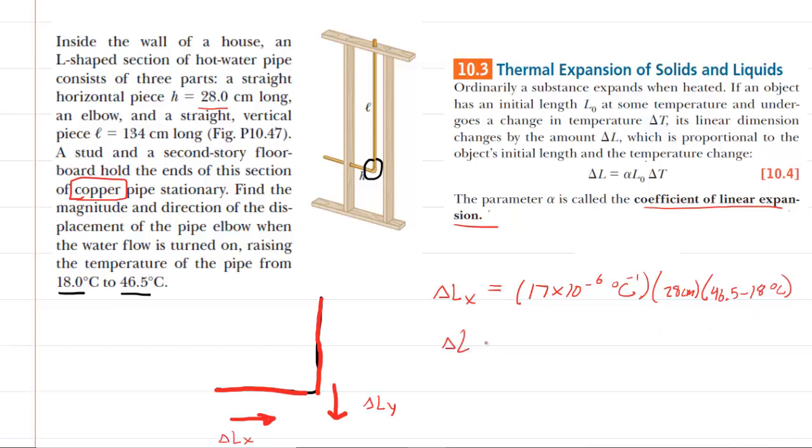So you'll multiply that out. And when you do so, you should get 0.0136 approximately. And if we study the units carefully, the inverse degrees Celsius and the degrees Celsius cancel. This will leave us with just centimeters.